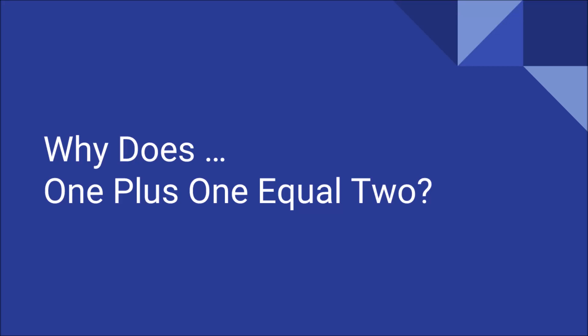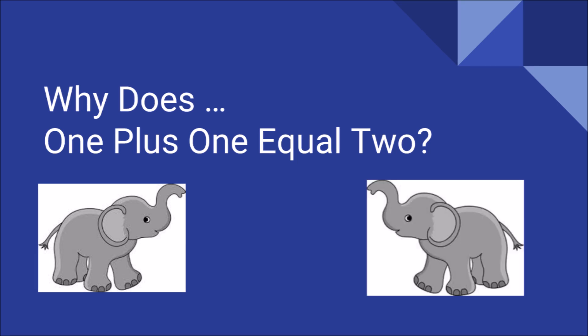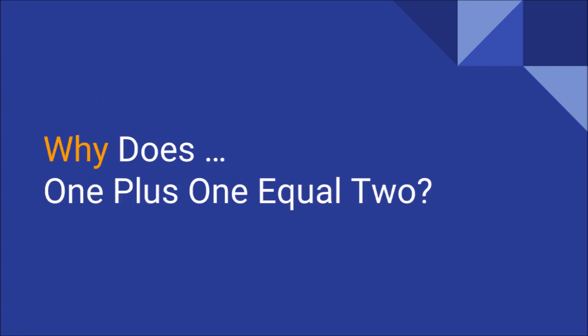Why does 1 plus 1 equal 2? If you've ever pondered this, your first thought might be to ask what does the question even mean? If I have an elephant, and I add another elephant, then obviously I now have two elephants! How can we even approach the question of why?